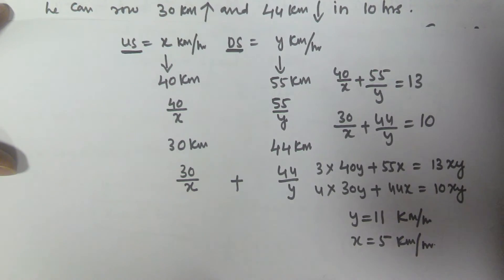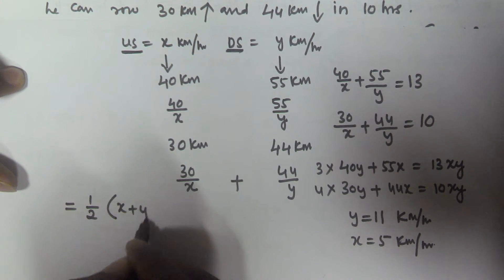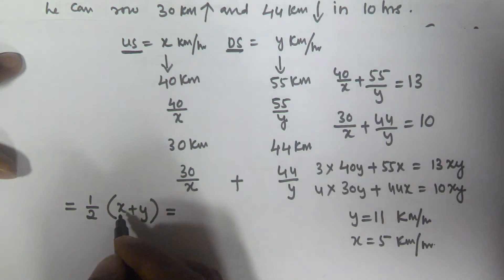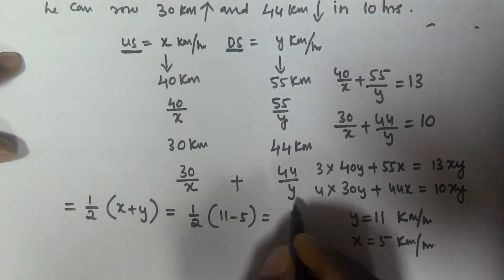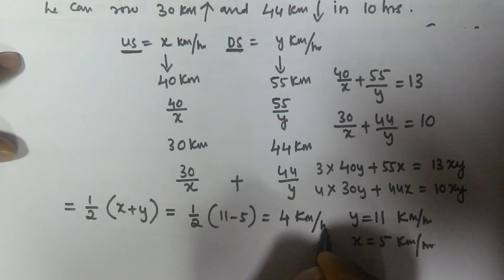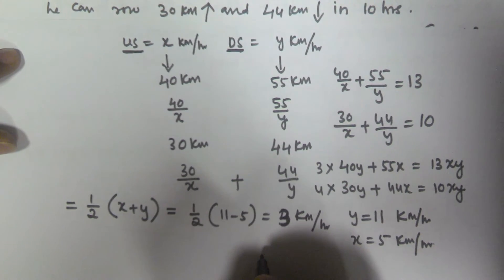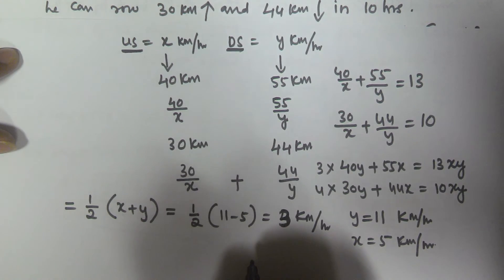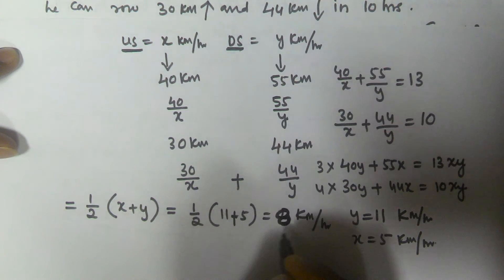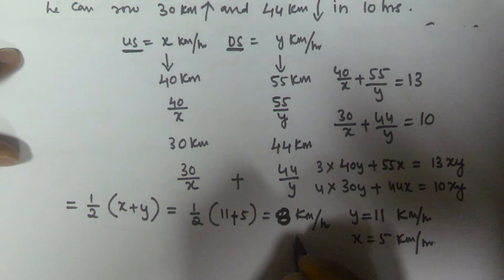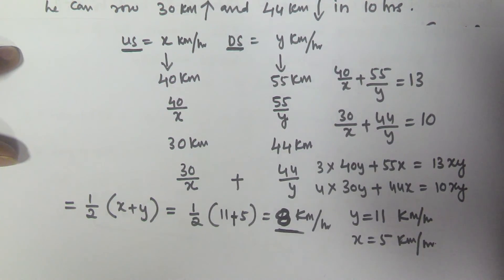We have to find the speed of the man in still water, which is given by 1/2 of (downstream speed plus upstream speed), that is 1/2 of (11 plus 5), which equals 1/2 of 16, giving us 8 kilometers per hour. So the speed of the man in still water is 8 kilometers per hour.